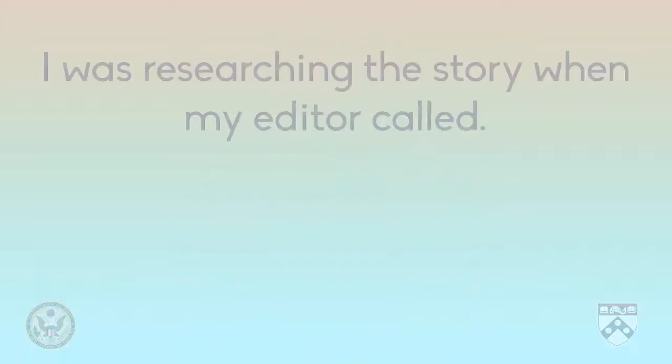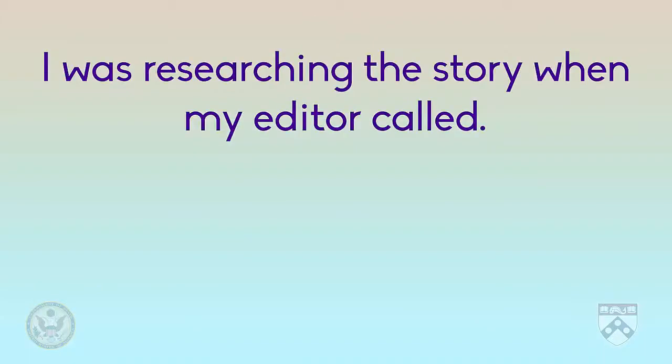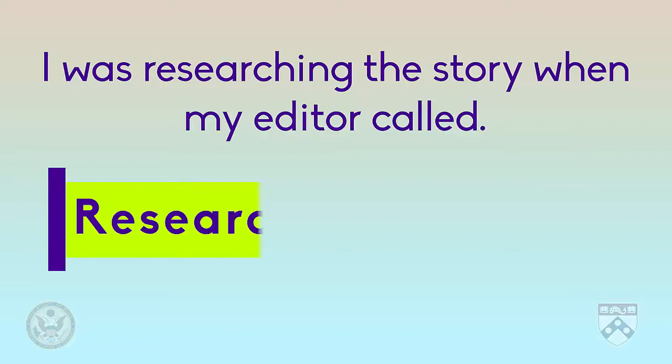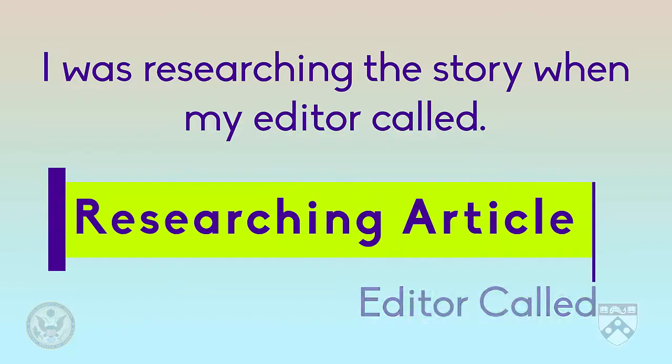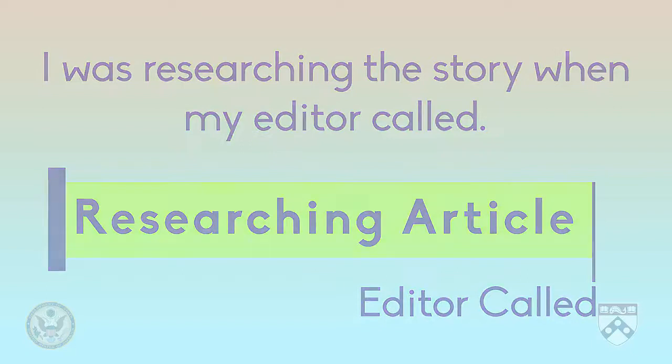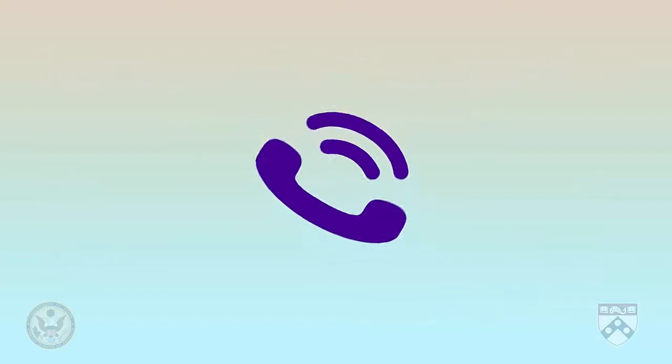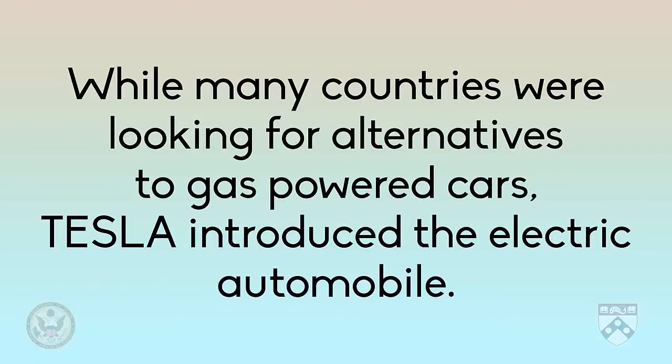Many times, the past progressive and the simple past are used together. For example, 'I was researching the story when my editor called.' Here, you can tell that the speaker was researching, perhaps for many minutes or hours. The editor called during that time. We don't know exactly when the editor called, but we know what the speaker was doing at the time. Here's another example: 'While many countries were looking for alternatives to gas-powered cars, Tesla introduced the electric automobile.'